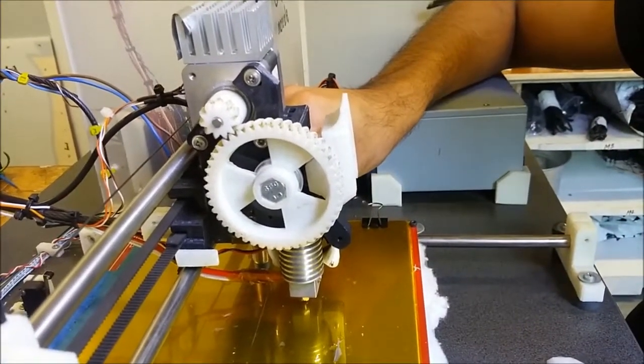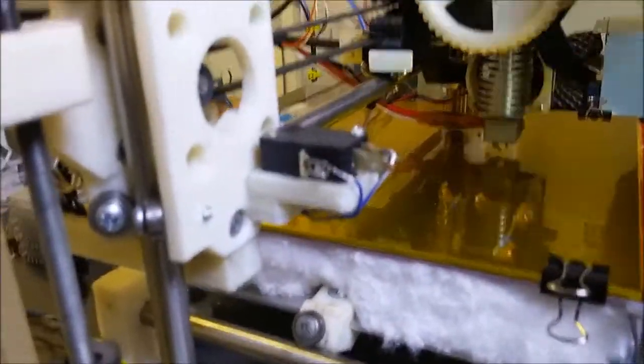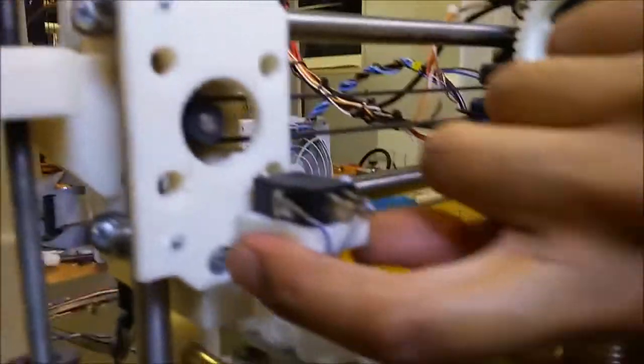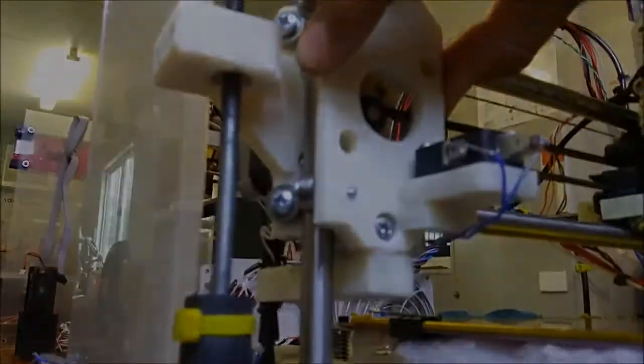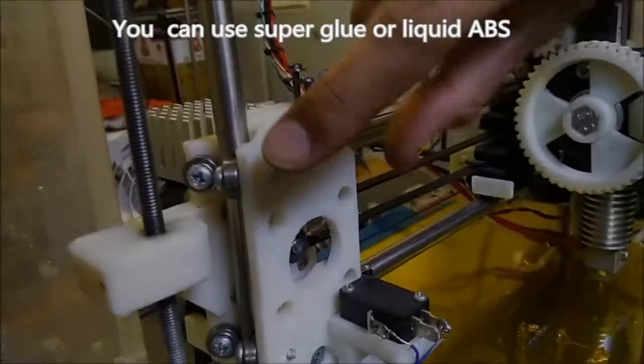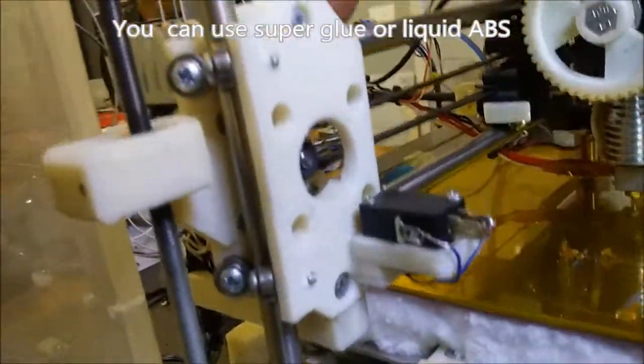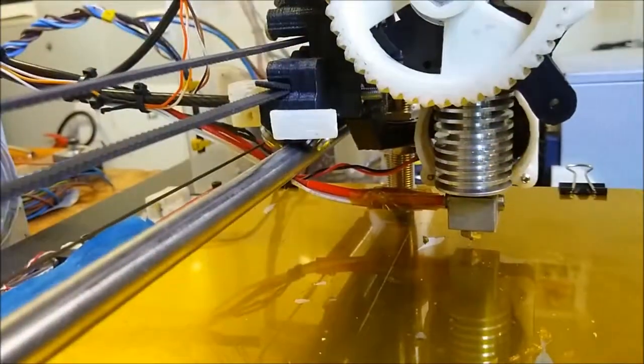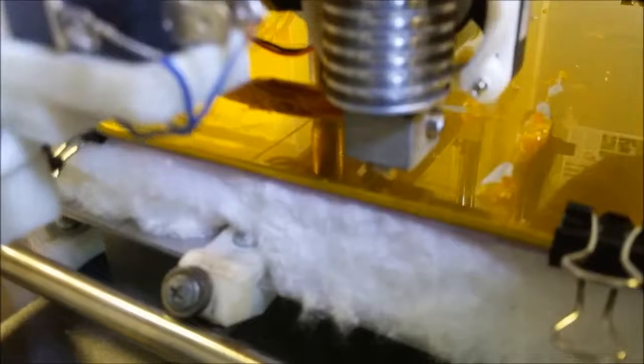It basically covers it. So that's an x end stop switch. That's the x end stop bracket which is glued onto the bottom right corner of the x motor mount. So to glue that on use superglue. I believe we've actually given you superglue to do that. So there's a little tab. It allows this carriage to hit the x end stop switch to adjust the home position.